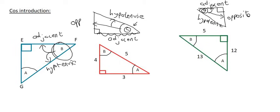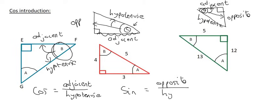And that's what cos is. Cos is all about the adjacent side divided by the hypotenuse, whereas we saw in the previous video sin is opposite over hypotenuse.